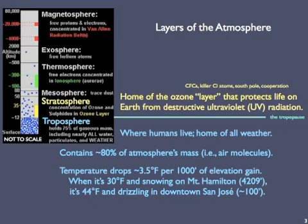So when it's 30 degrees Fahrenheit and snowing on Mount Hamilton, with an elevation of about 4,200 feet, it's 44 degrees Fahrenheit and drizzling in nearby downtown San Jose, which has an elevation of only 100 feet.